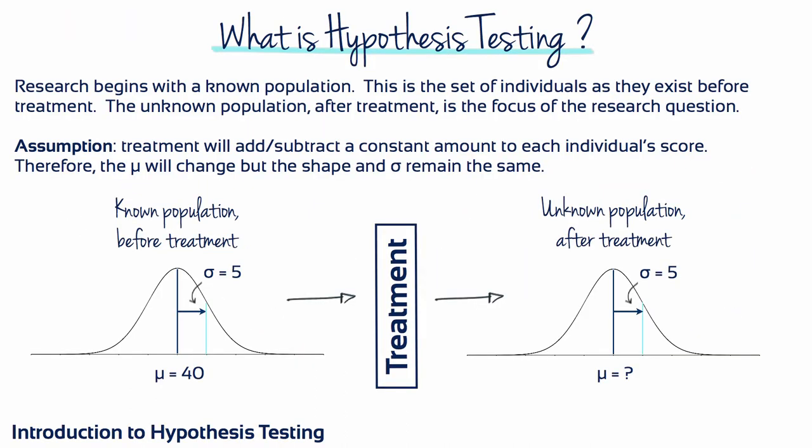It's usually impossible or impractical for a researcher to observe every individual in a population. Therefore, researchers usually collect data from a sample, and then use the sample data to help answer questions about the population.